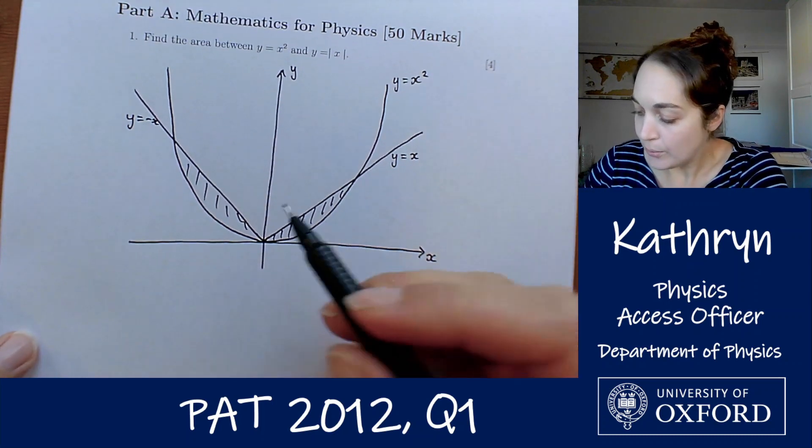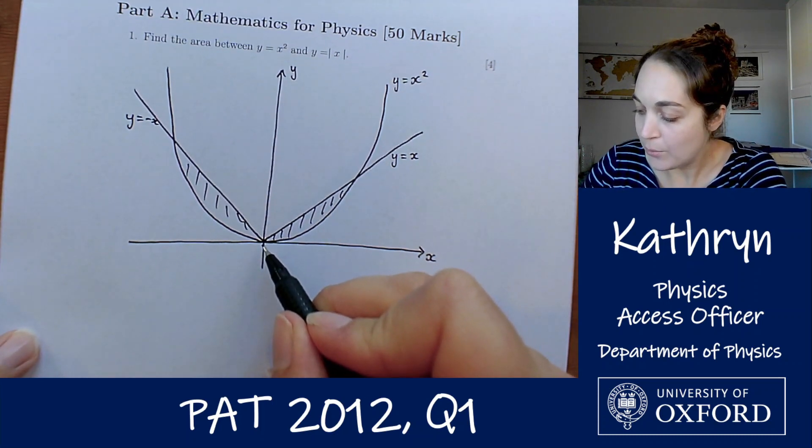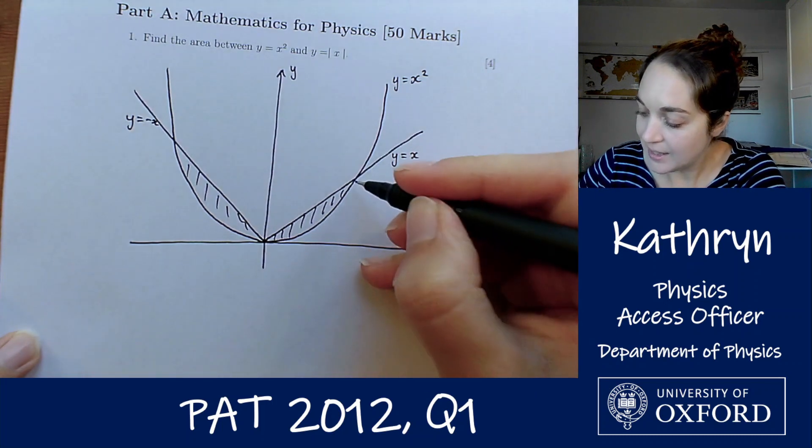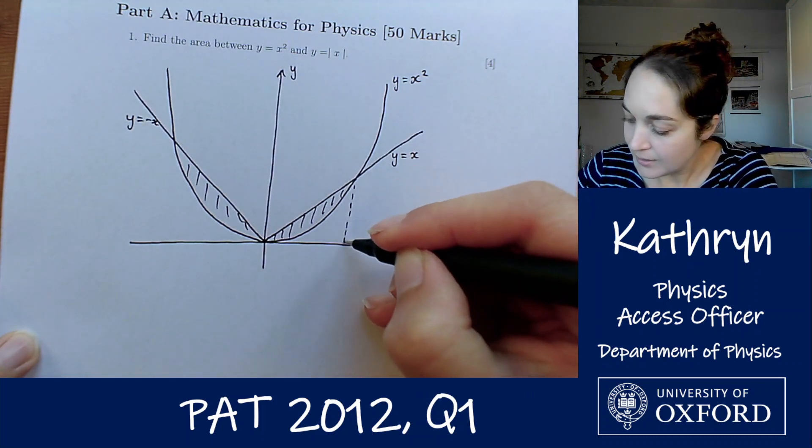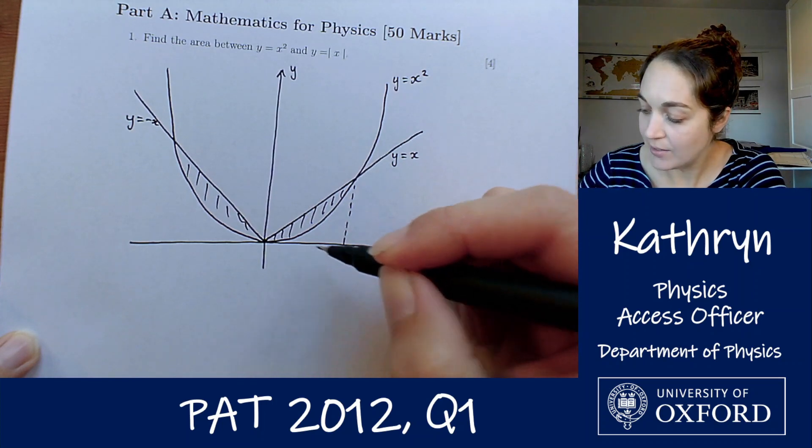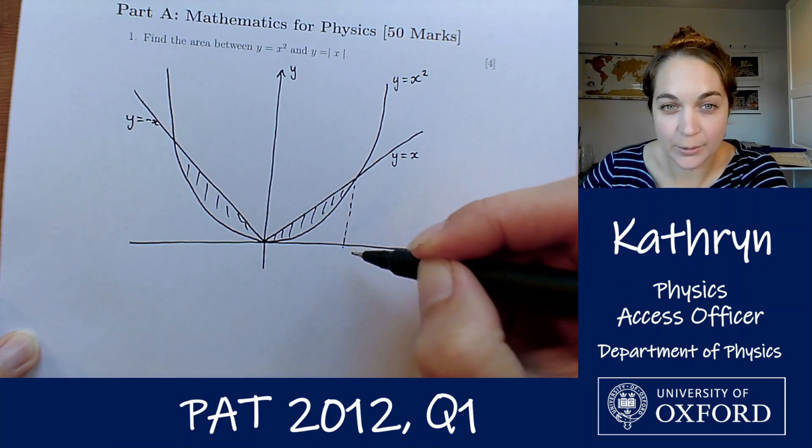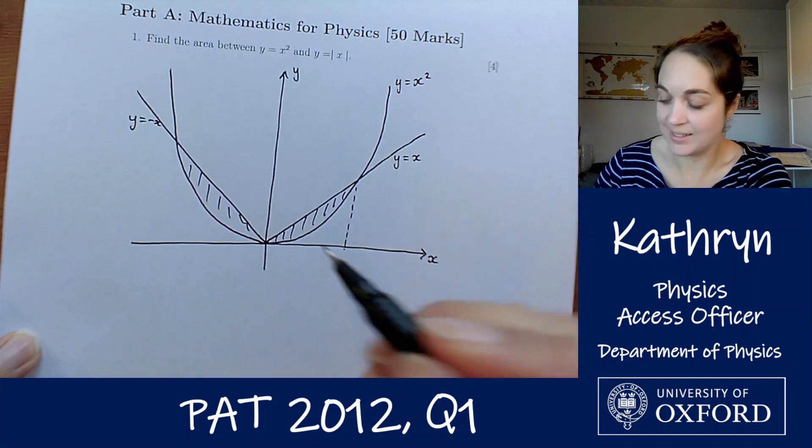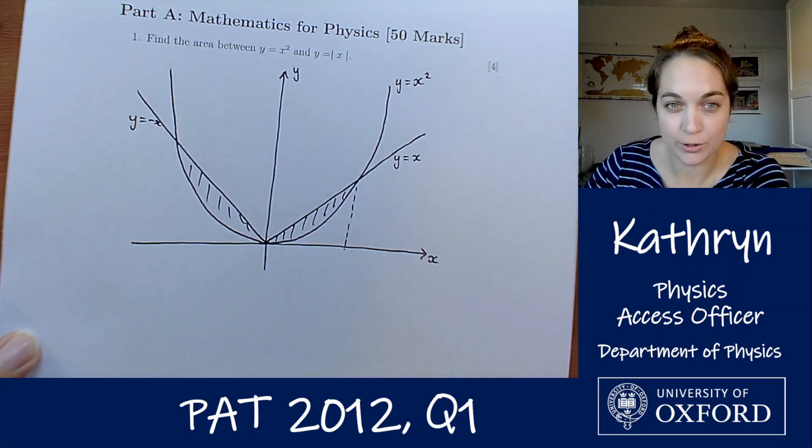So, how about we just find that area and double it? And we can do that if we find the area under y equals x, and then we subtract the area under y equals x squared, that will give us that little shape there, and then we can double it to get the total area for the two sides.